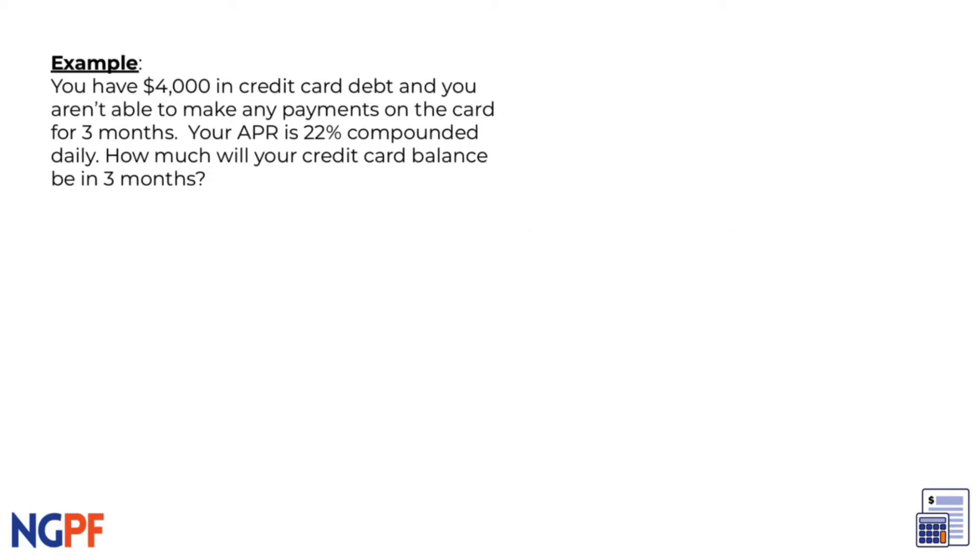First, we must identify and substitute our variables. For the compound interest formula, we need the principal, interest rate, number of times it will be compounded per year, and the number of years. We know our initial principal, or how much you borrowed, is $4,000, so let's put that in for P.